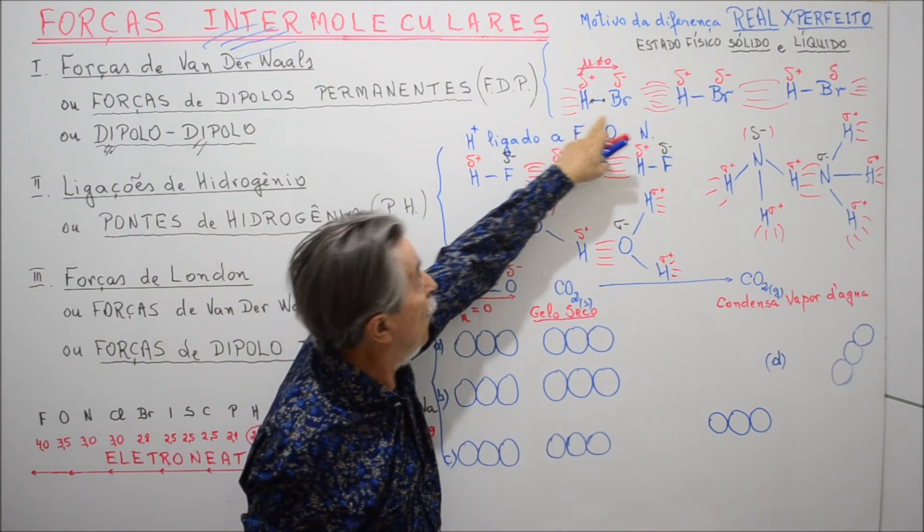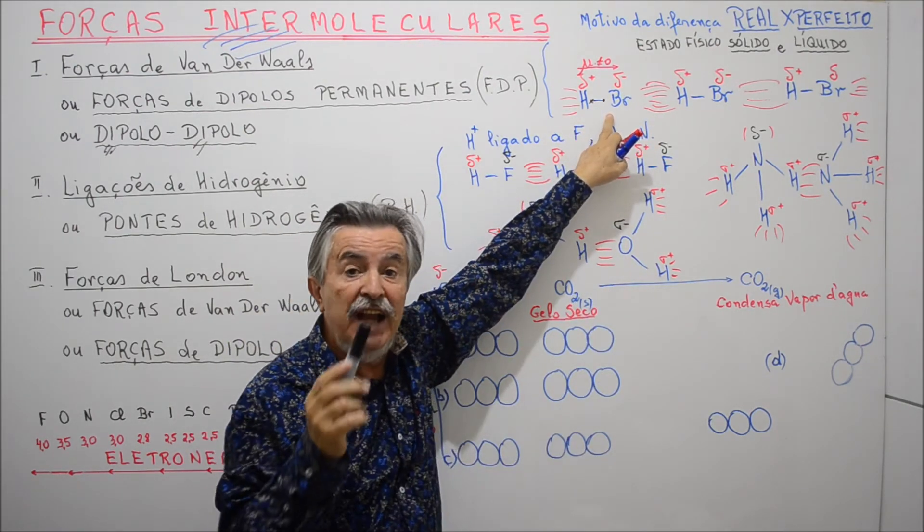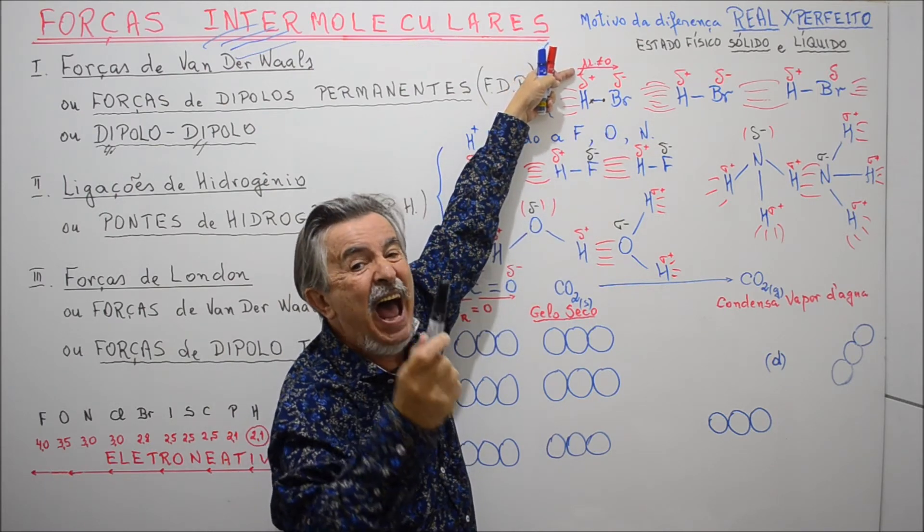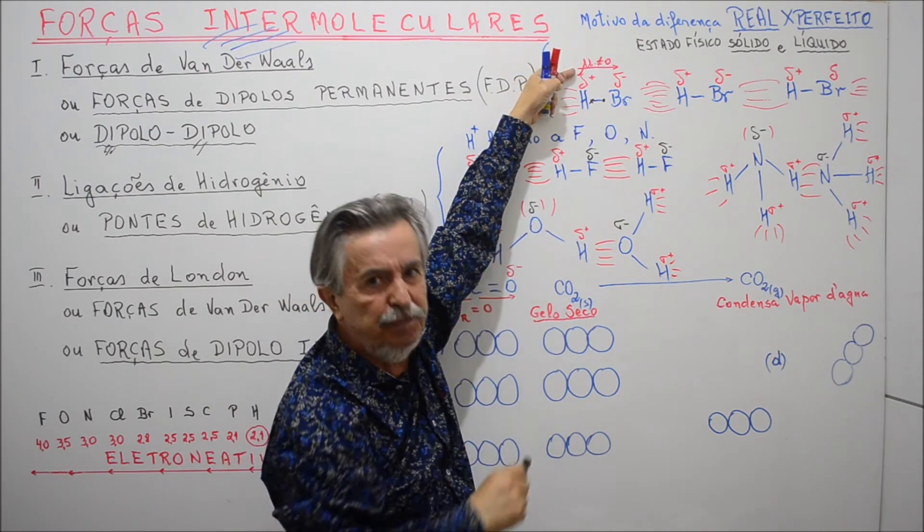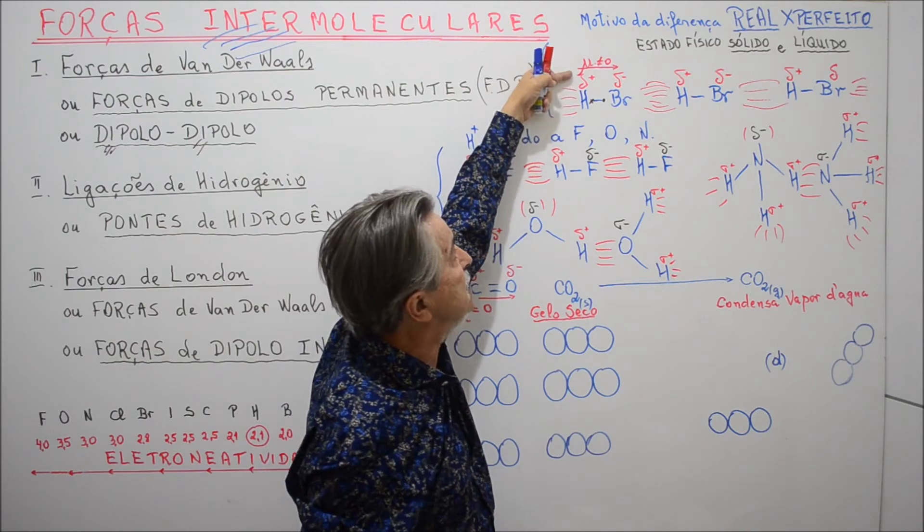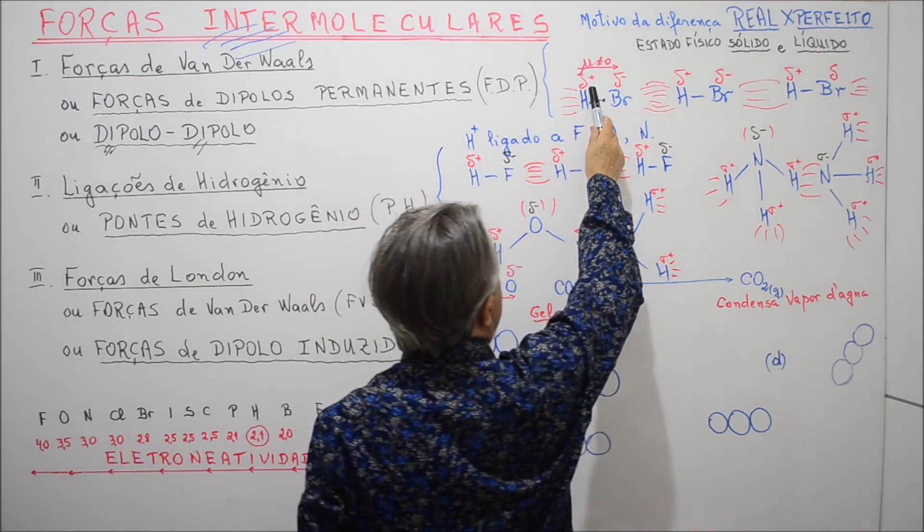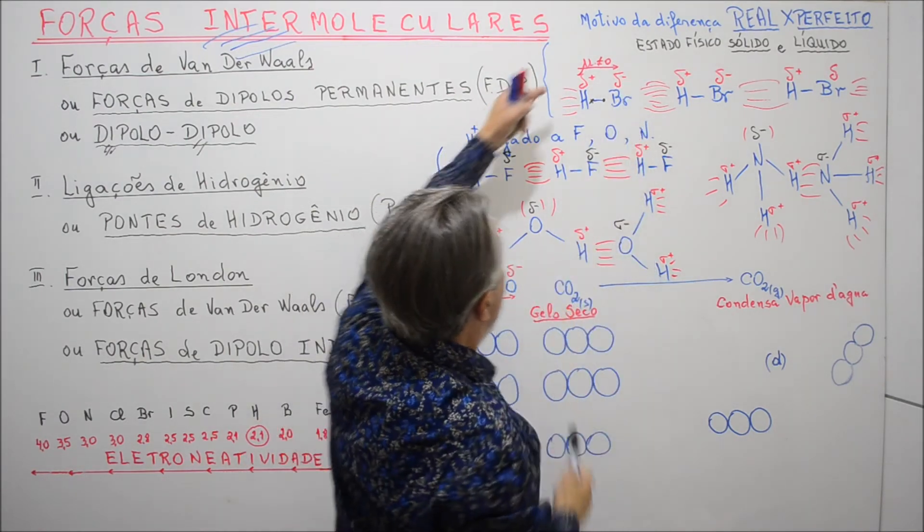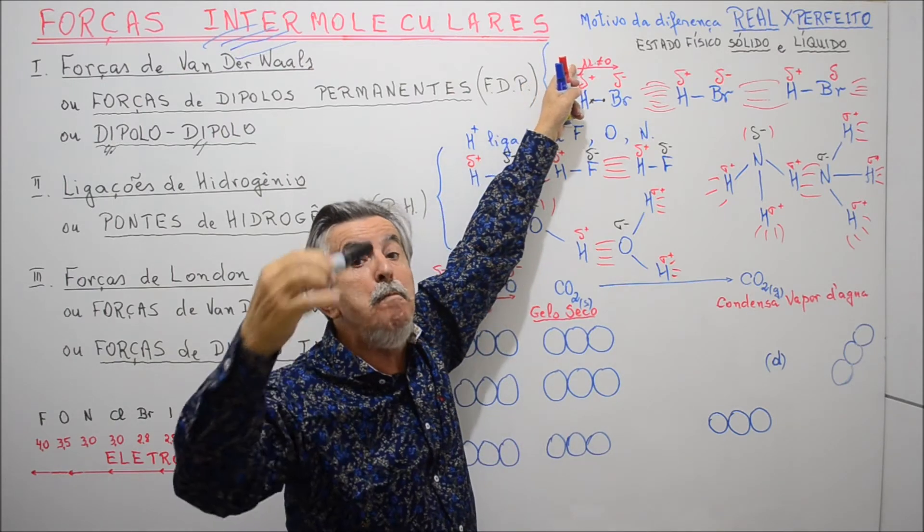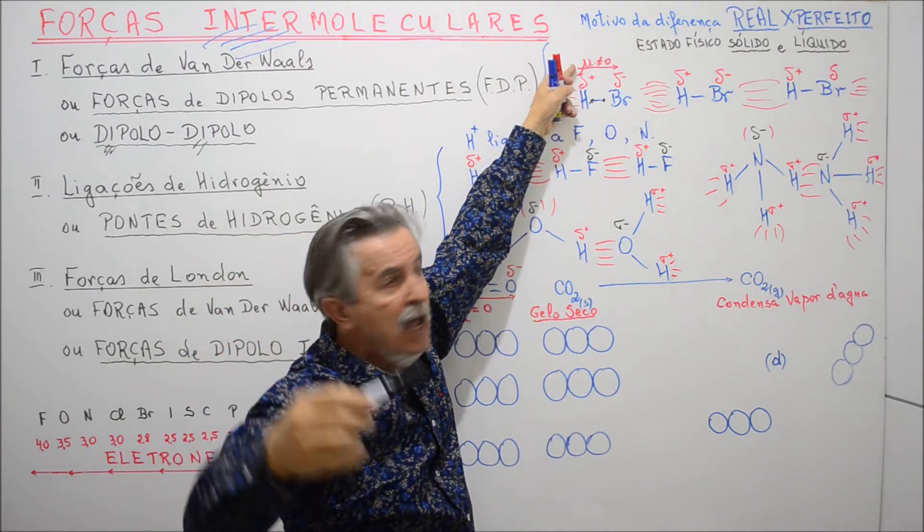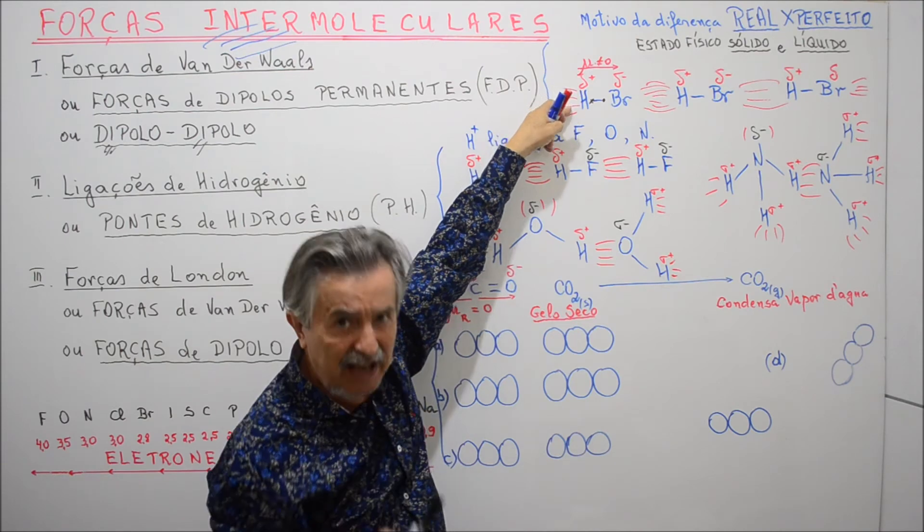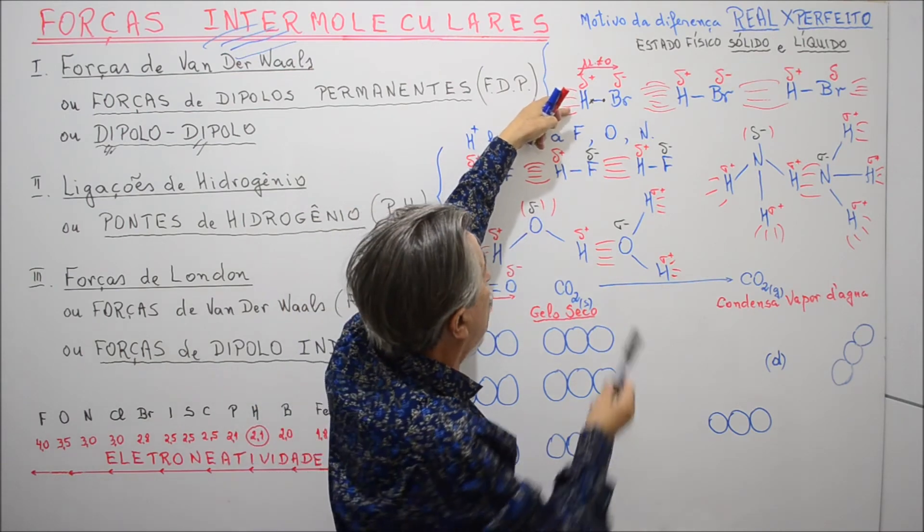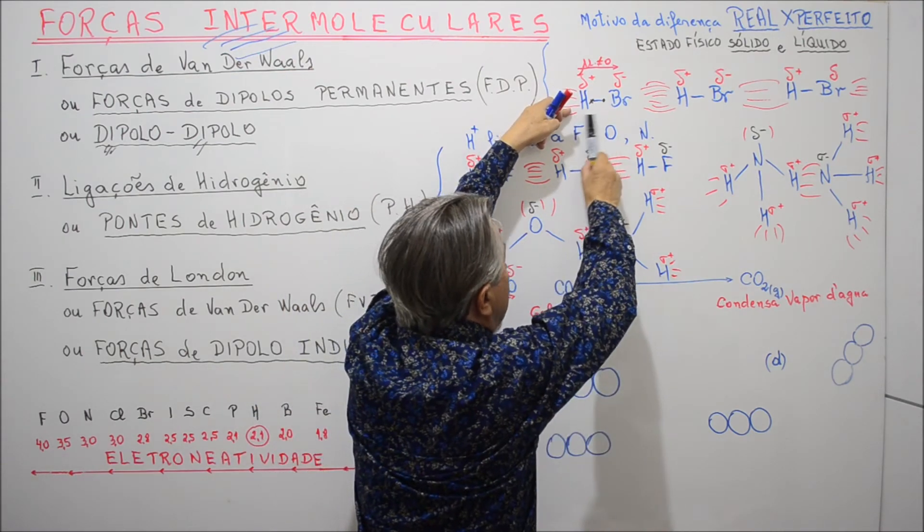E havendo dois polos existirá um vetor para avaliar a intensidade desse dipolo. E o nome desse vetor que vai do mais para o menos, o nome desse vetor é momento dipolar.